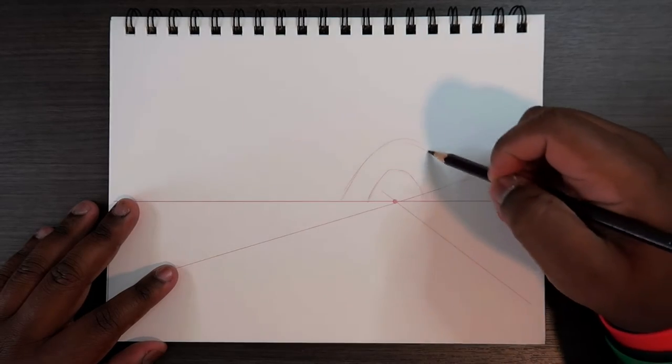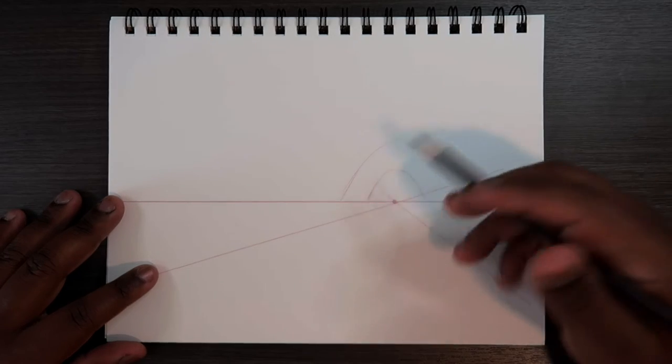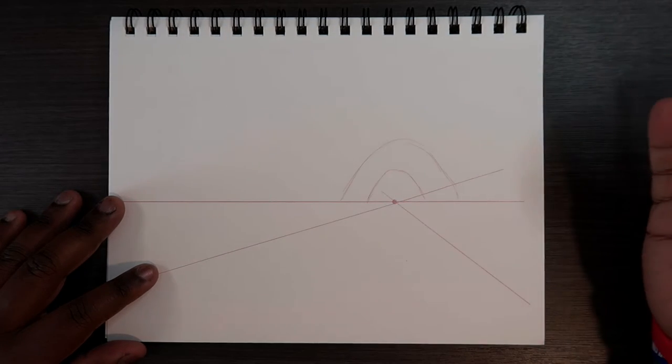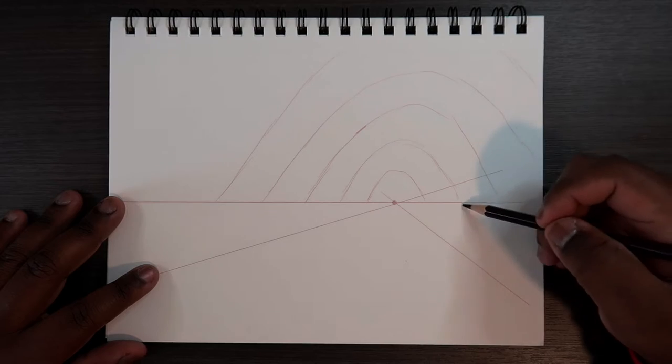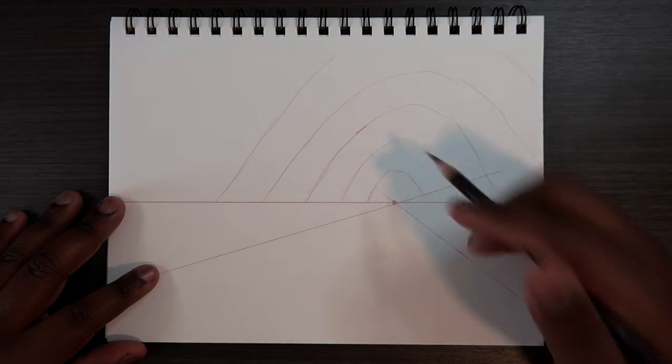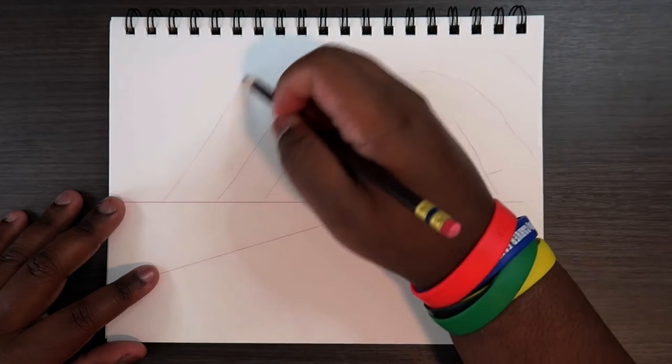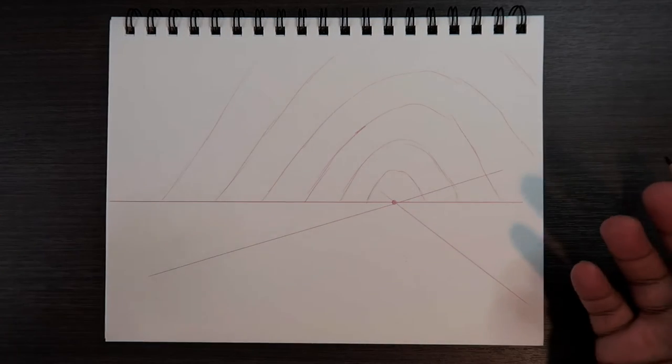And then we're going to make a series of arcs. And again, they don't have to match the same shape of this one, but it would look better if you did. But I'm personally not going to. And some of these arcs will end up overlapping on the page. And that's okay because this is a cave when we're drawing it in perspective. So some parts of it will not be seen.